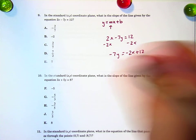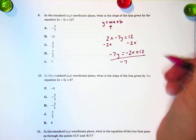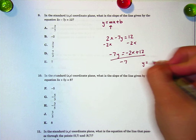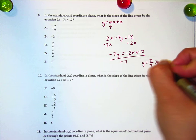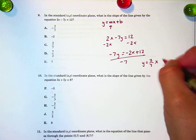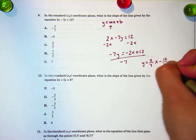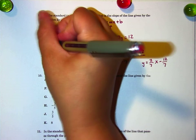And then, I'm trying to get y by itself. So, I'll divide by negative 7 all over. So, that's y equals positive 2 7th x, 2 7ths x minus 12 7ths. So, the slope is c.